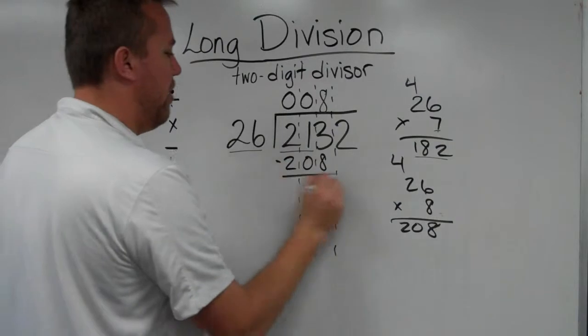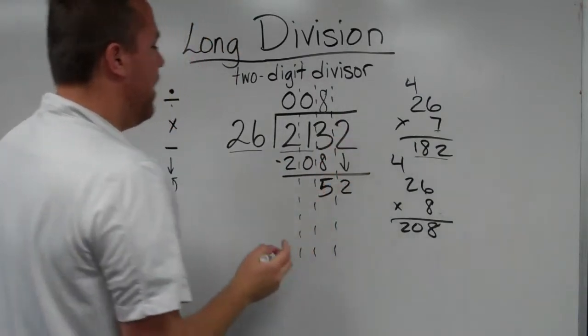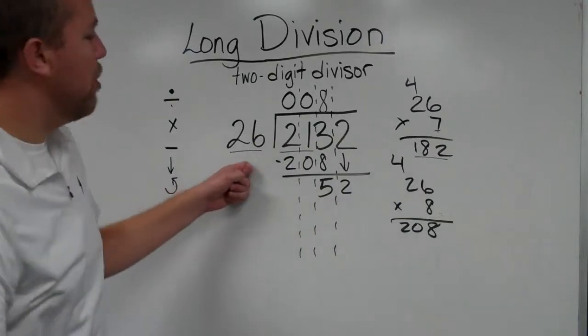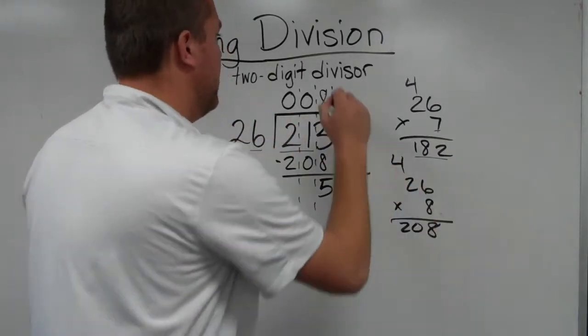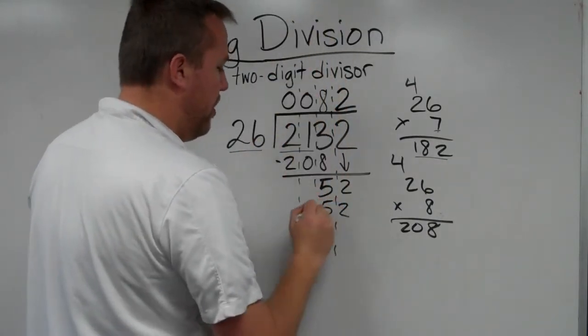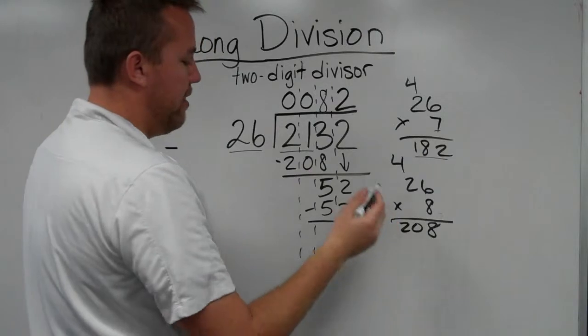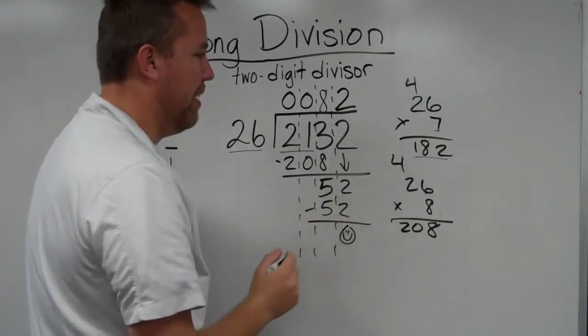So 208. Sister now can subtract, get 5. Brother brings down. And Rufus says to repeat. 26 goes into 52 two times. 26 times 2 is 52. Sister subtracts, gets a 0. Brother can't bring down. We are done.